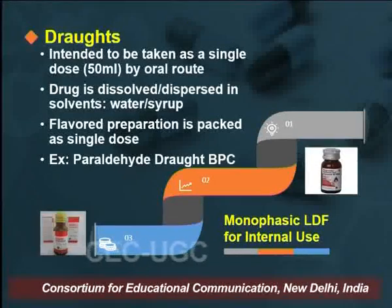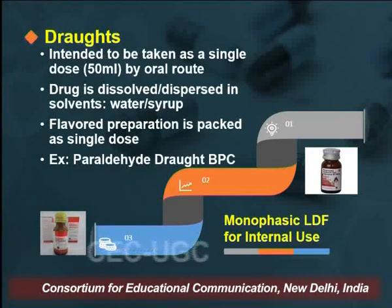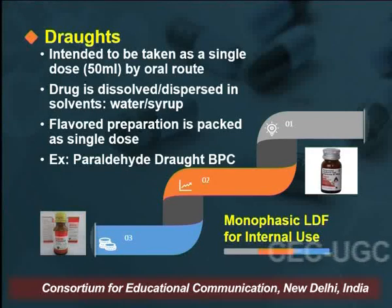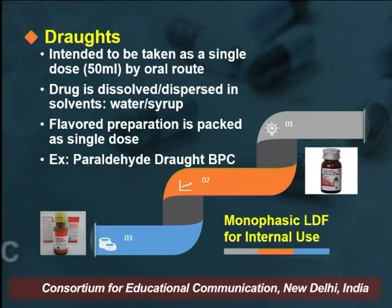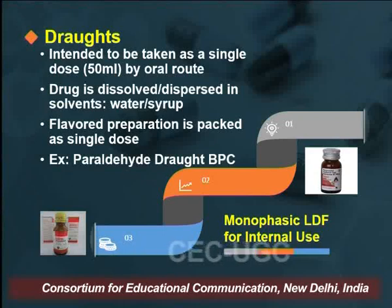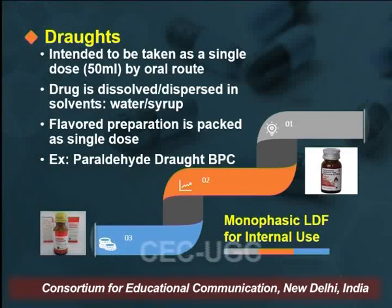The second type under monophasic liquids for internal use is draughts. Draughts are intended to be taken as single dose preparations, generally 50 ml in capacity by oral route. The drug is either dissolved or dispersed in solvents which could be water or syrup. These are generally flavoured preparations packed as single dose preparations. Example: paraldehyde draught, official in the British Pharmaceutical Codex.